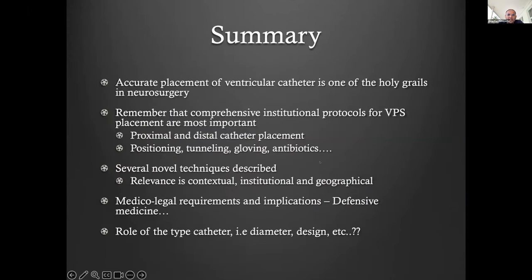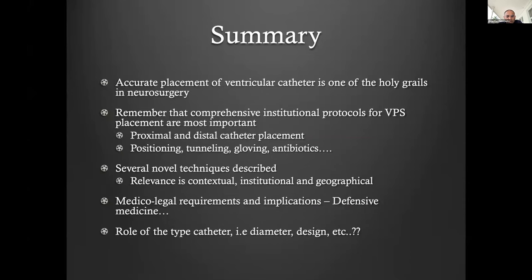In summary, accurate placement of ventricular catheter has been and always will be one of the holy grails of neurosurgery. A comprehensive institutional protocol for VPS placement is most important — proximal and distal catheter placement, positioning, tunneling, gloving, antibiotics, how many people in theater — that's probably more important than how the actual catheter is placed. Medical legal requirements and implications are incredibly important for this type of surgery. One of the biggest claims settled in our country was from a misplaced ventricular catheter in a child. Defensive medicine is very much part of how we practice whether we like it or not.